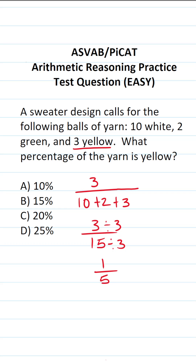Now we have to convert this fraction to a percent, and there are a few ways to do that. One way is to take the denominator 5 and multiply it by 20, then multiply the numerator by 20 as well, making this 20 over 100 — which is 20%.